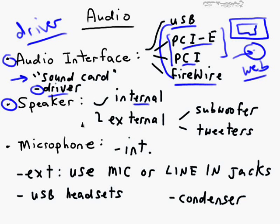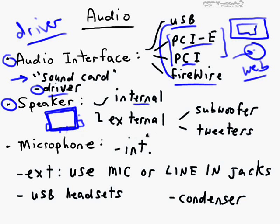Speakers can be internal or external. Examples of internal speakers would be all-in-one systems like the iMac, where the motherboard and peripherals are all within a single unit including speakers. More commonly in desktop computing environments though you're not going to get much performance with internal speakers — they're tinny — so we'll want to go with an external solution. You could have just a traditional single pair of speakers or you could go for a surround sound system that involves subwoofers, tweeters, etc.